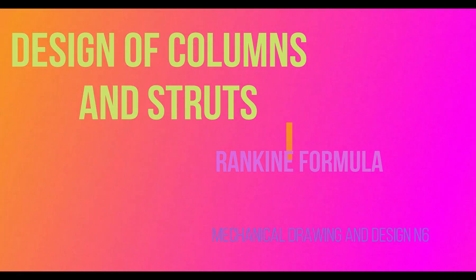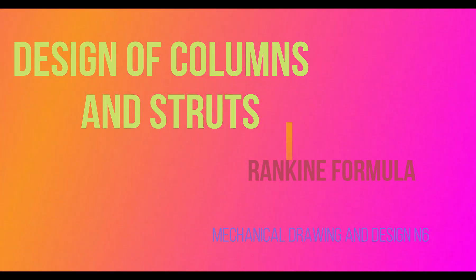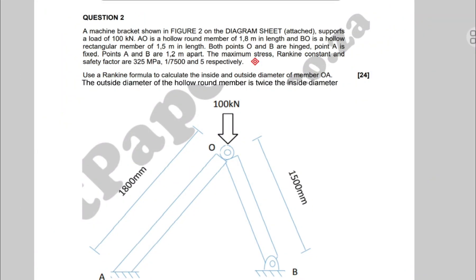Hello guys, welcome to this presentation where we are going to be discussing the design of columns and struts using the Rankine formula. This is a topic in Mechanical Drawing and Design. The question involves a machine bracket that supports a load of 100 kilonewtons. Member AO is a hollow round member 1.8 meters in length, and BO is a hollow rectangular member of 1.5 meters in length. Both points O and B are hinged, point A is fixed, and points A and B are 1.2 meters apart.